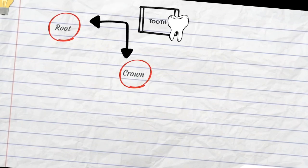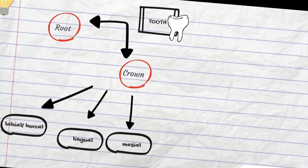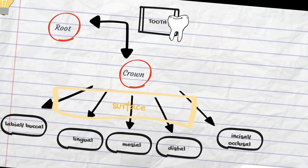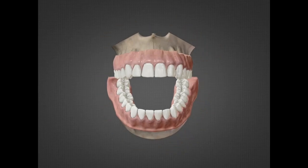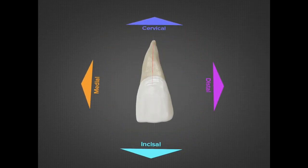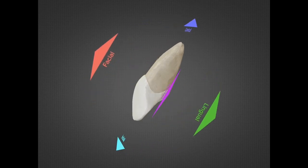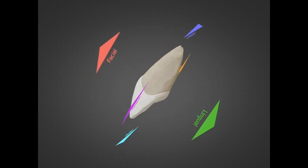We'll cover crown and root, and the crown will be discussed under labial/buccal, lingual, mesial, distal, and incisal or occlusal surfaces. For each surface we'll discuss its shape, crown outline, and surface height of contour. The labial surface crown outline can be divided into mesial, distal, incisal, and cervical outlines, and for proximal surfaces we can divide into labial, lingual, and cervical crown outlines.